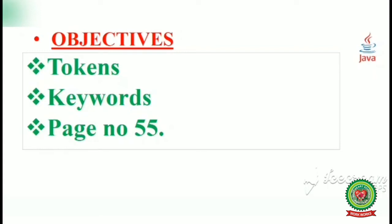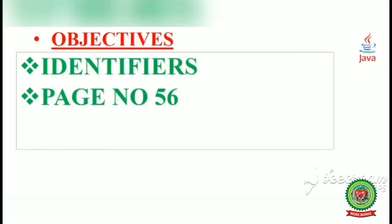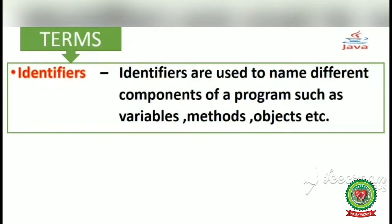Keywords are reserved for Java like public, static, int, float. Today we will discuss identifiers. Identifiers means names used in a Java program, like a class name or a variable name. We will discuss this through page number 56, starting with the term identifiers.